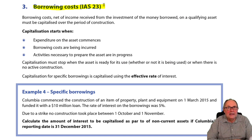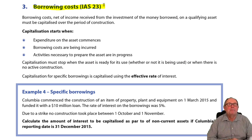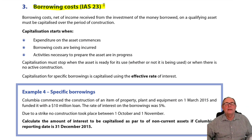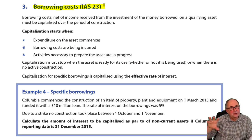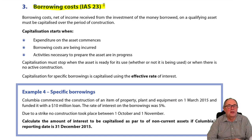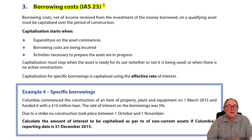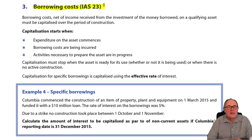IAS 23 requires that when you have a building that's going to take maybe a year to complete, alongside the other costs, the finance costs should be added to the cost of the asset. That makes the cost of the asset bigger. Eventually that will wash out through the profit and loss when the asset is actually depreciated. It's a very sensitive issue because if you're not showing the finance costs as finance costs but adding them to the cost of the assets, investors may be confused about the amount of interest the business is actually paying. That's why the cash flow statement is important.